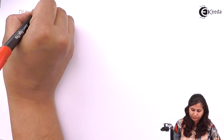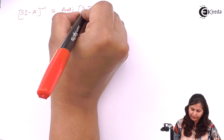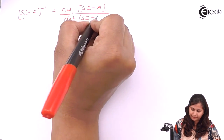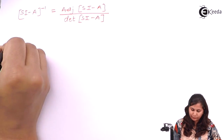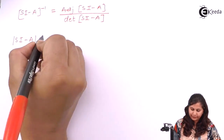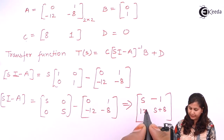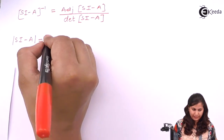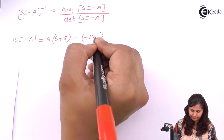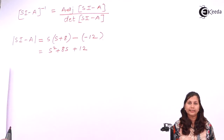Now we calculate the inverse of (sI - A) using the formula: adjoint of (sI - A) divided by determinant of (sI - A). The determinant of (sI - A) equals s(s+8) minus (-12), which gives s² + 8s + 12.